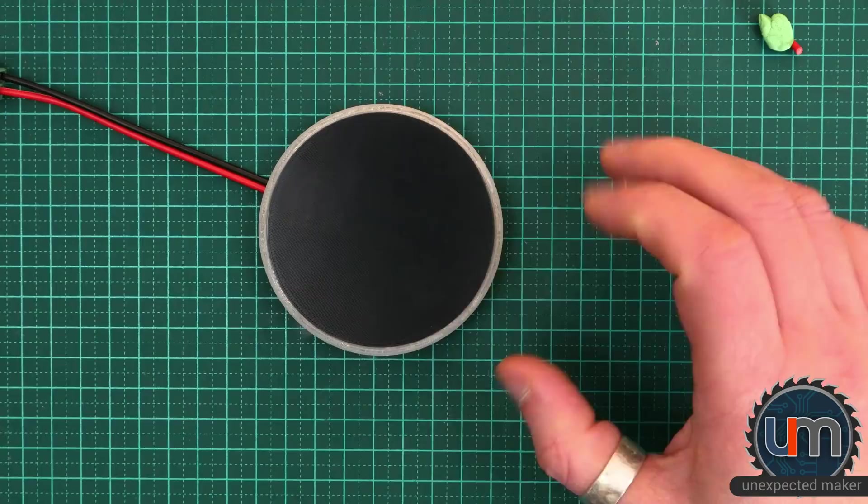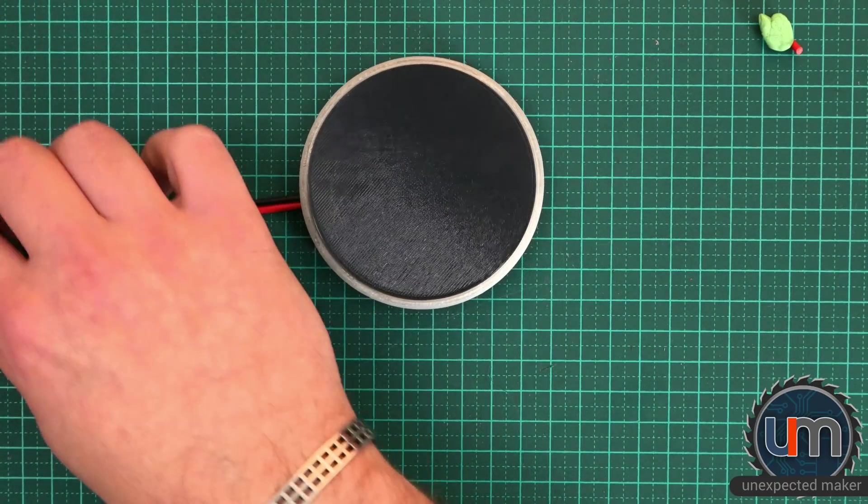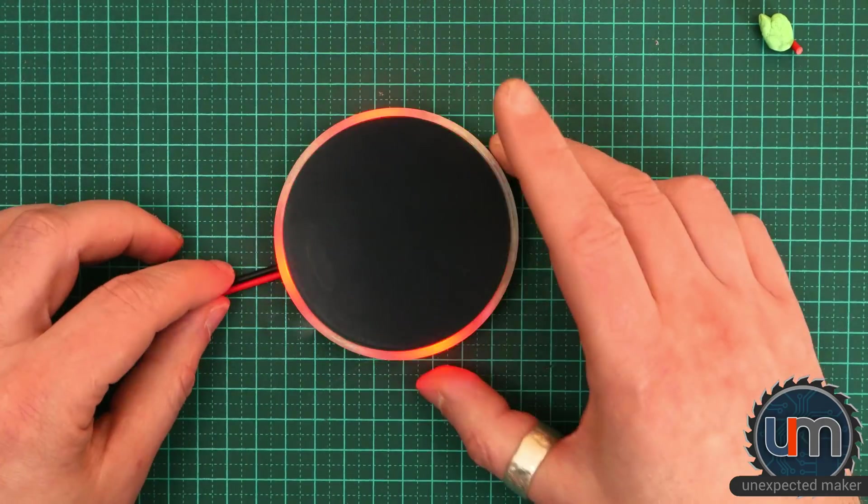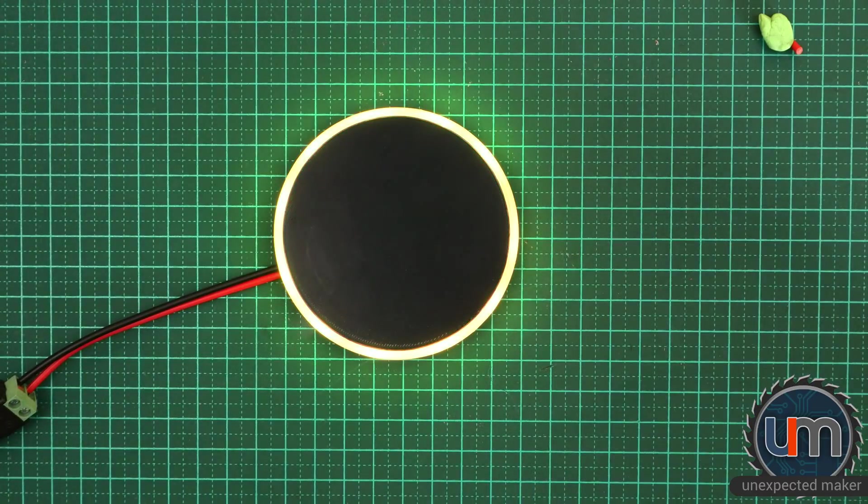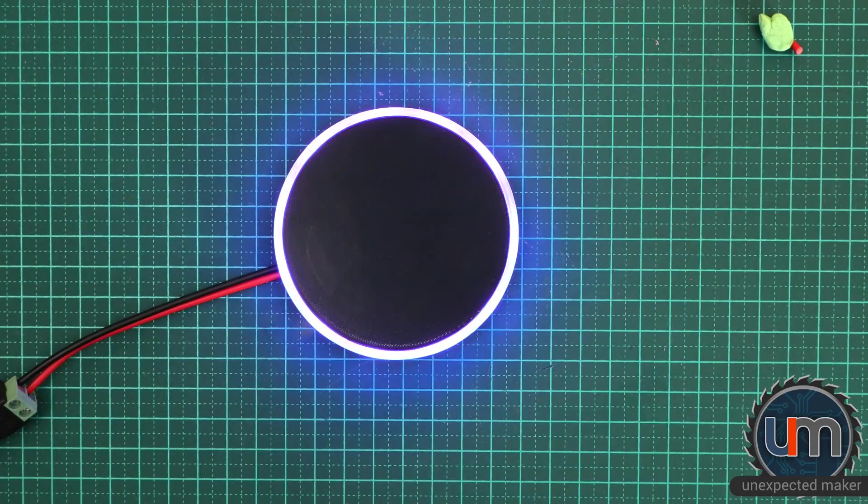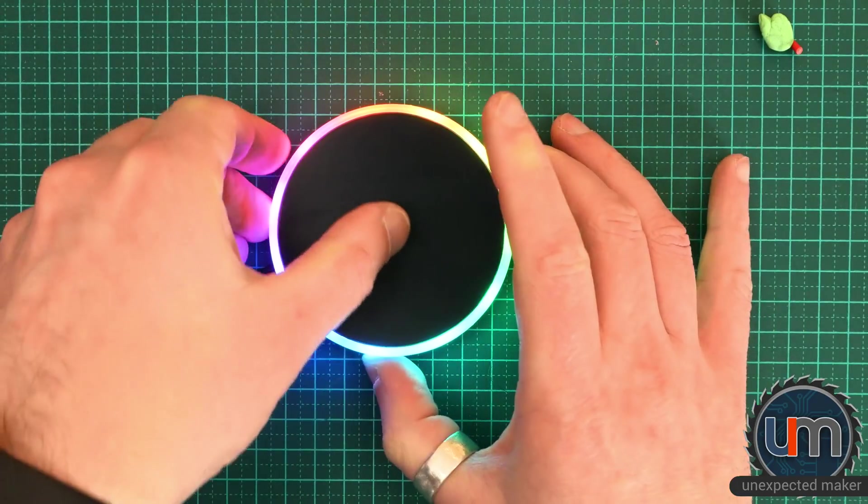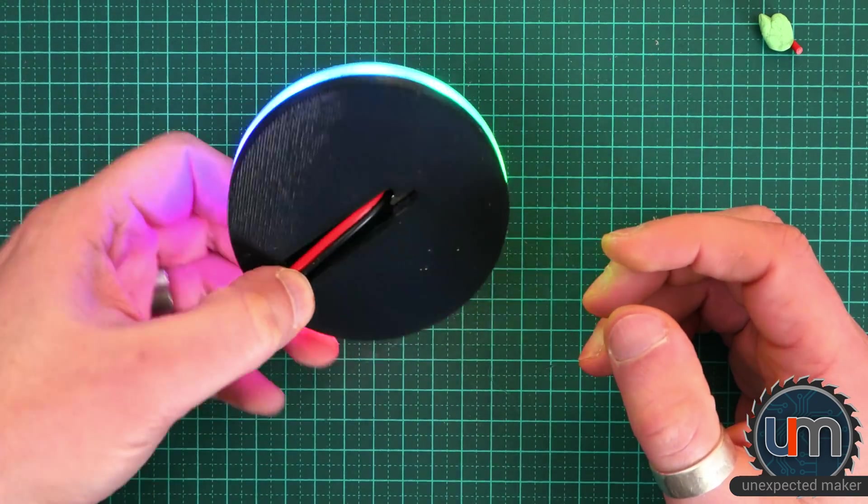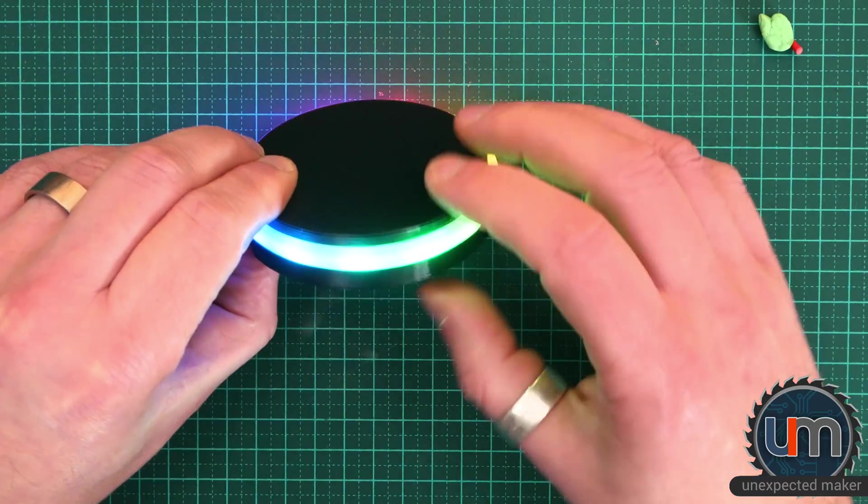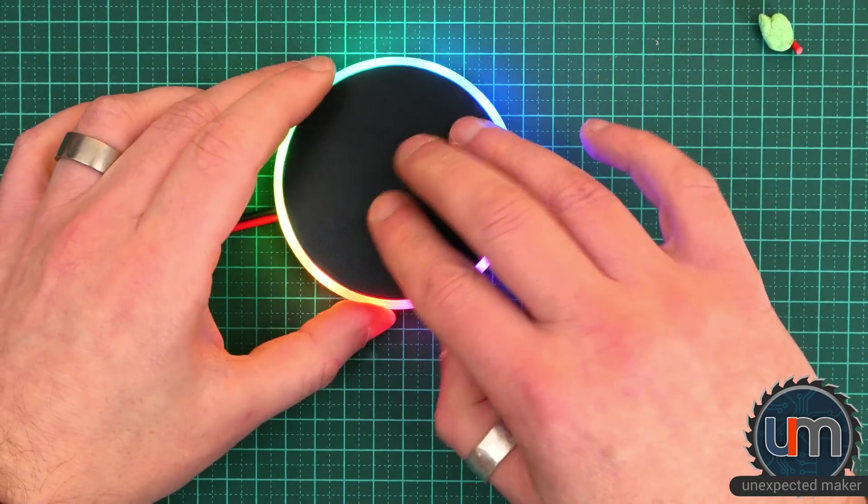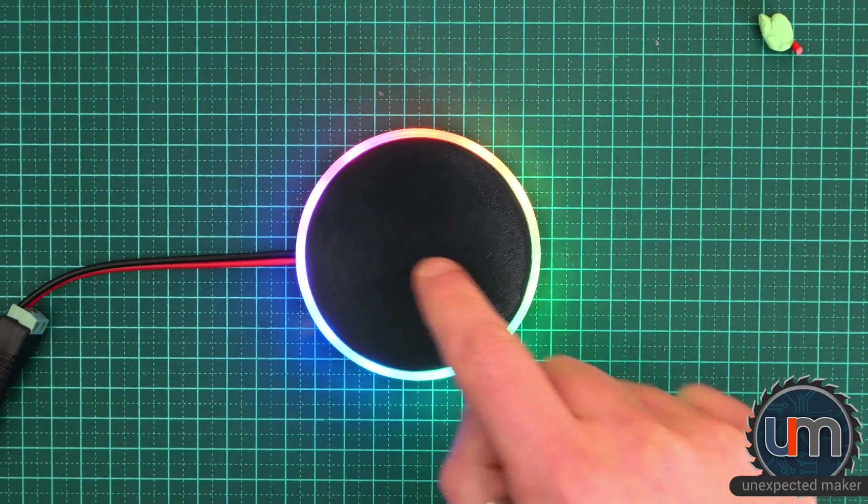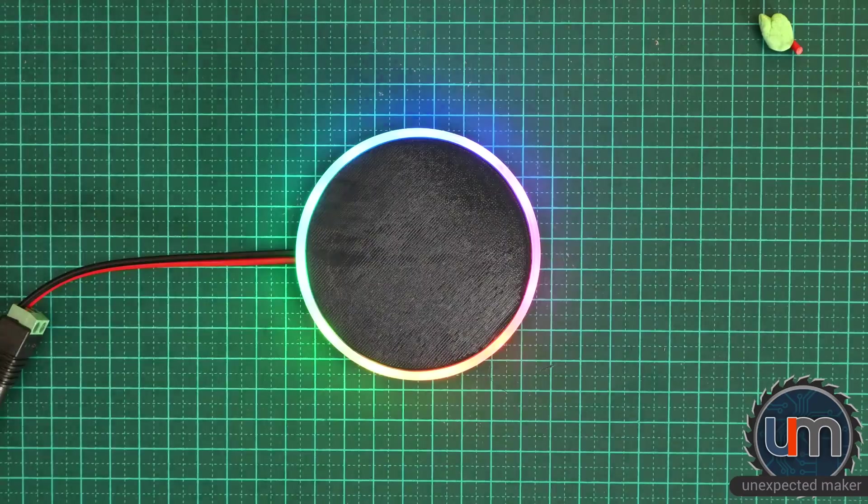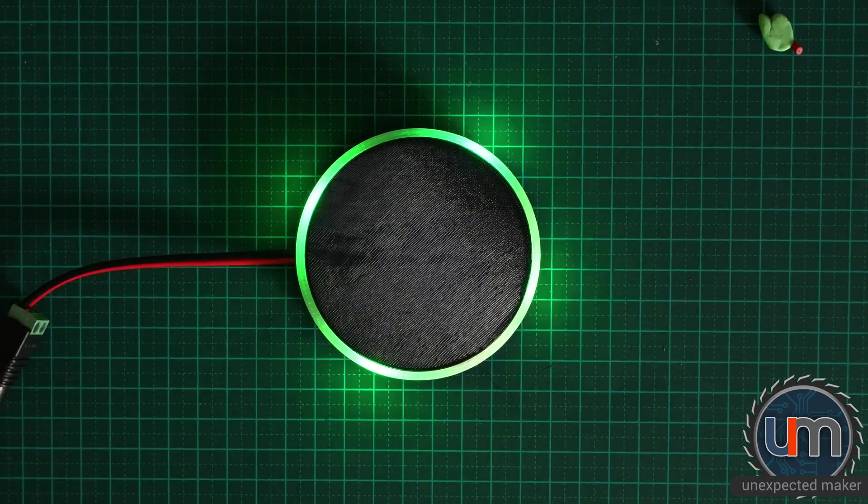So now all we need to do is test it. Right now there's just some strand test code on there. So it should just fire up the NeoPixels and make them go colorful. Which it is. This looks fantastic. This is my first time seeing it folks. This is the only one I've got. That just looks incredible. Let's just go from the side so you can see from the side. That is just amazing. So the idea is you'll be able to put the coffee on and as you click this or change it the colors will change. Let's turn the lights off and see how that looks in the dark. Disco coffee cup holder.